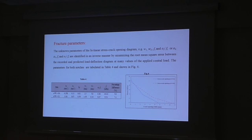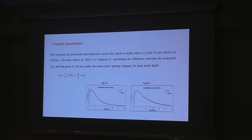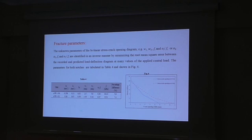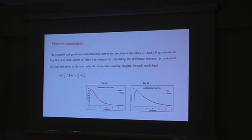The recorded and predicted load deflection curves for notch-to-depth ratio 0.1 and 0.6 are shown in Table 5a and 5b. And the error shown in Table 4 is obtained by calculating the difference between the measured GF, which is the size-independent fracture energy, and that calculated by the area under the softening diagram for each notch depth.